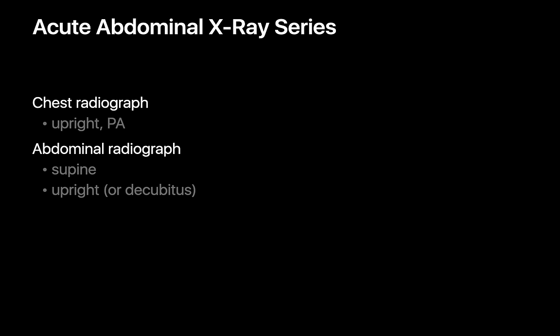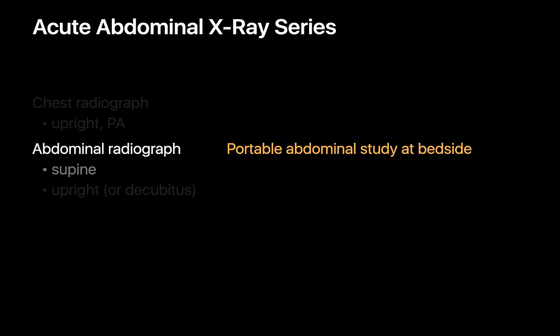A traditional acute abdominal x-ray series consists of an upright frontal chest x-ray and abdominal x-rays with the patient in supine and either upright or decubitus position. The upright chest x-ray is included to improve our ability to diagnose free air in the peritoneal cavity and to diagnose intrathoracic disorders — for example, a basal pneumonia presenting as abdominal pain. The upright or decubitus abdominal x-ray is performed in addition to the supine view to help recognize air-fluid levels. For portable bedside studies, most often just a supine abdominal radiograph is obtained with or without a portable chest x-ray.